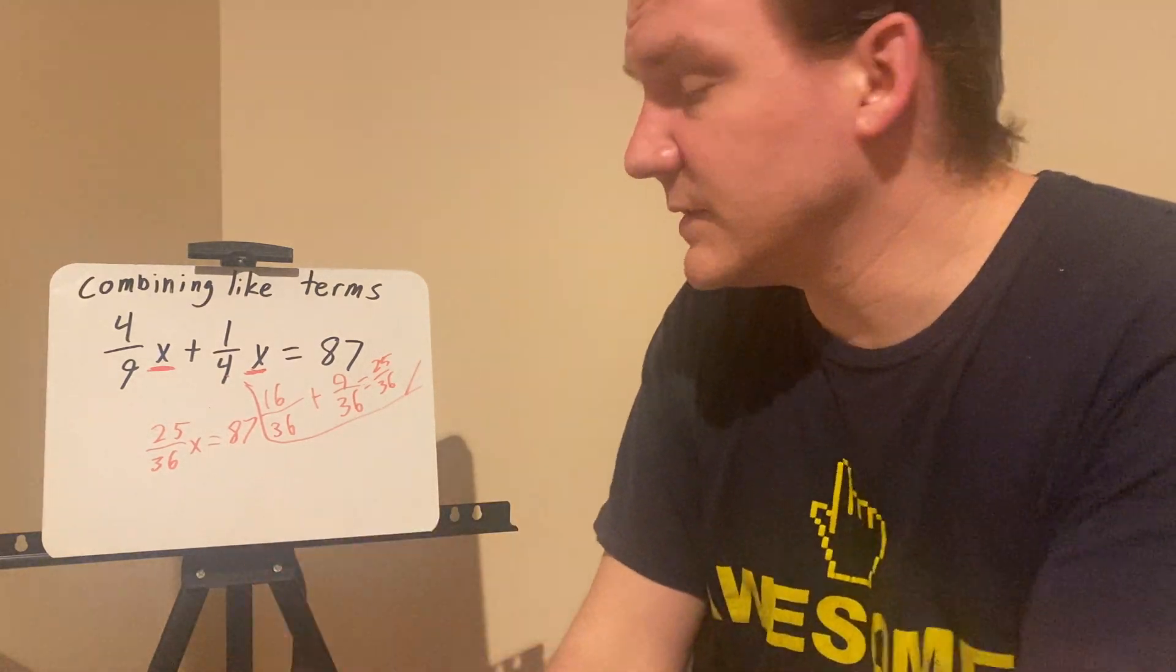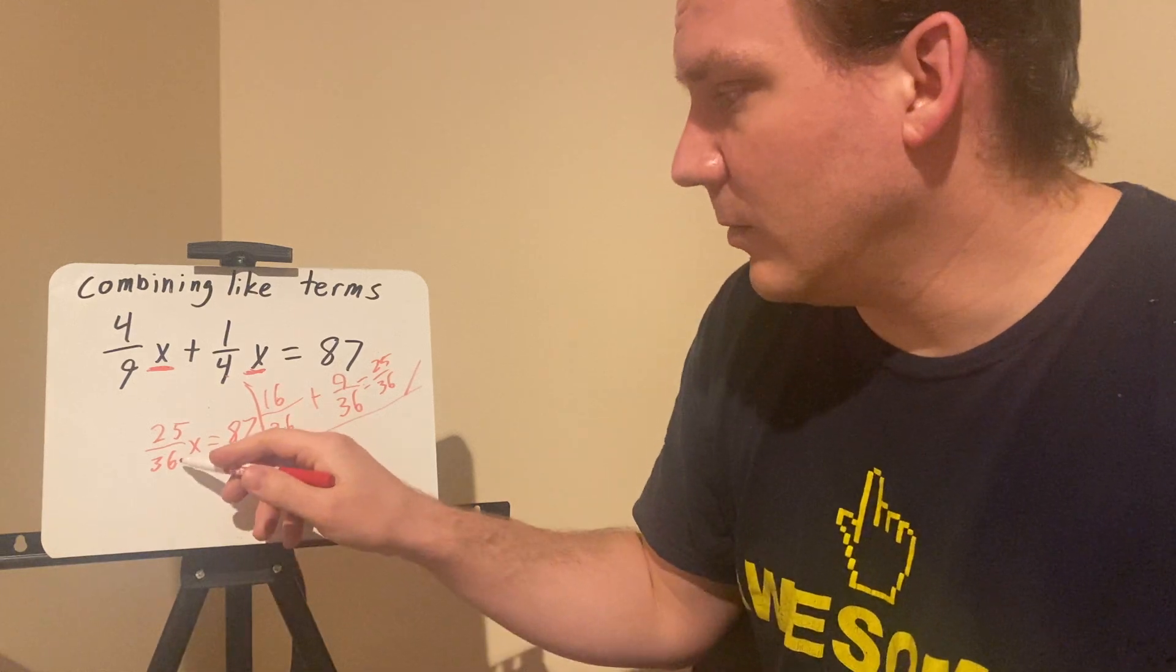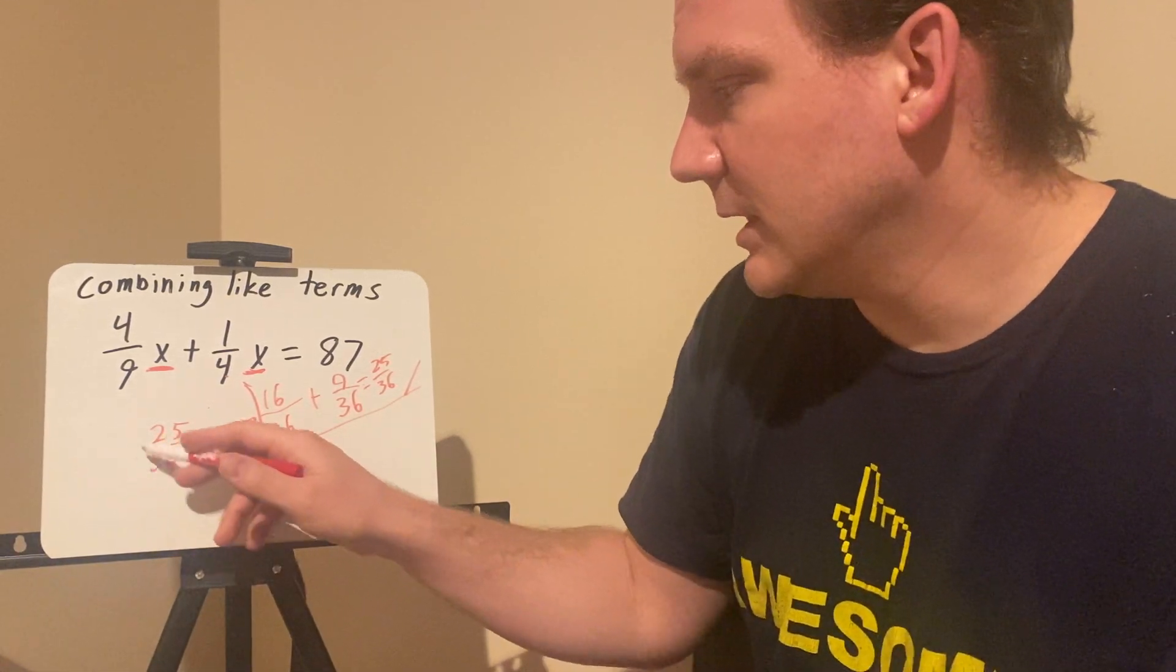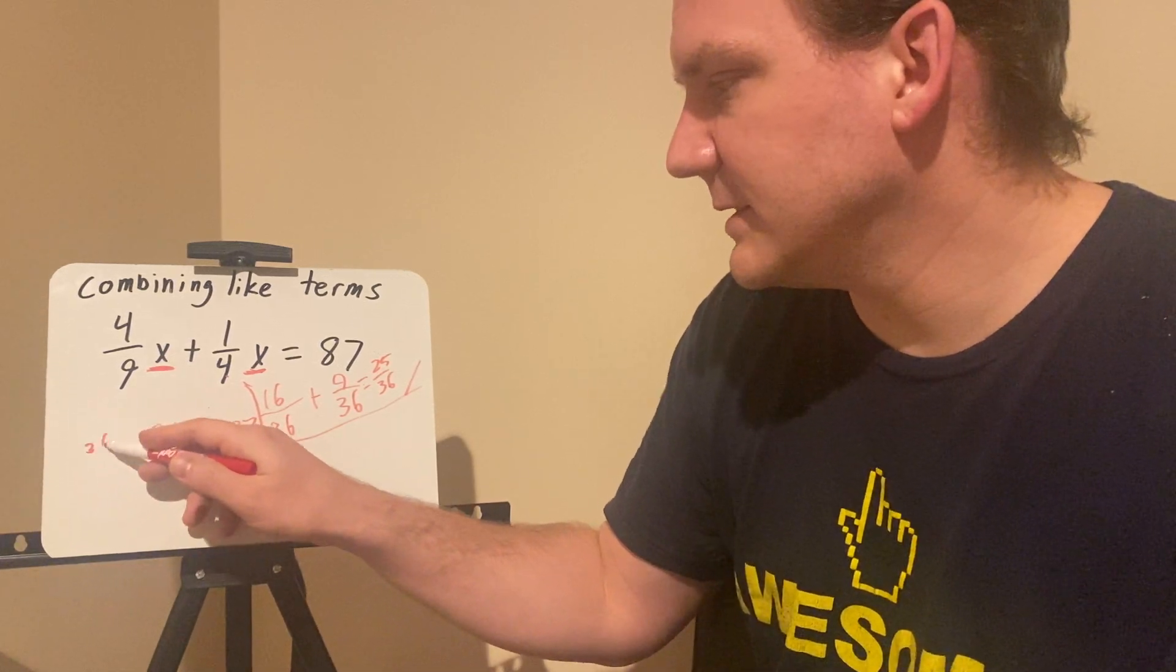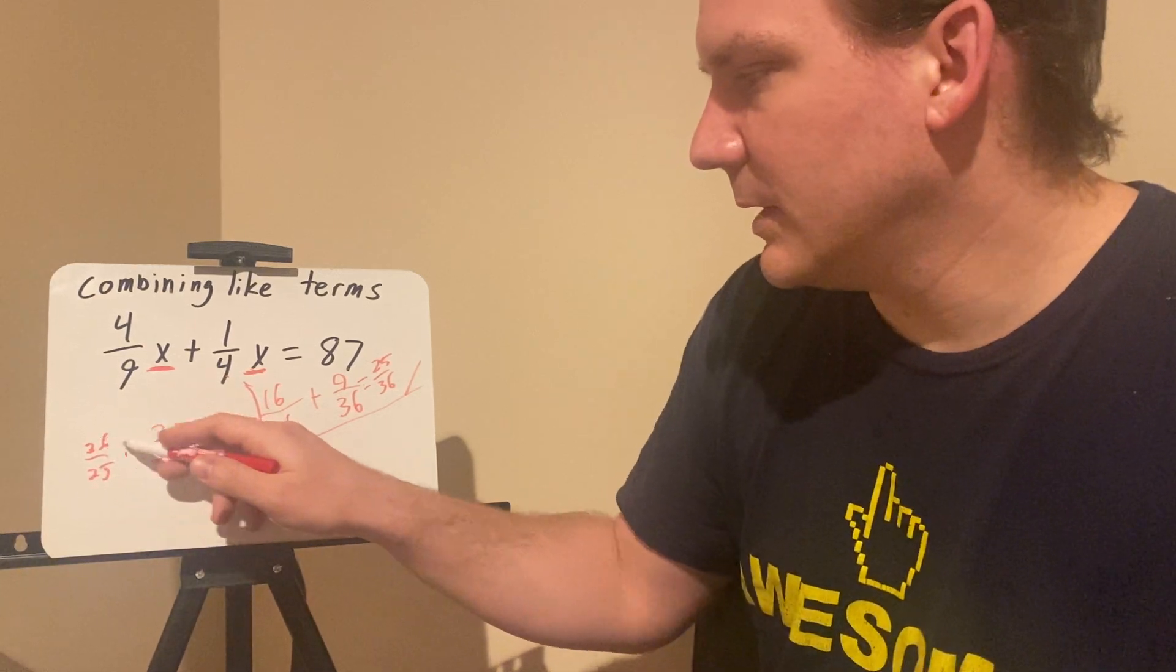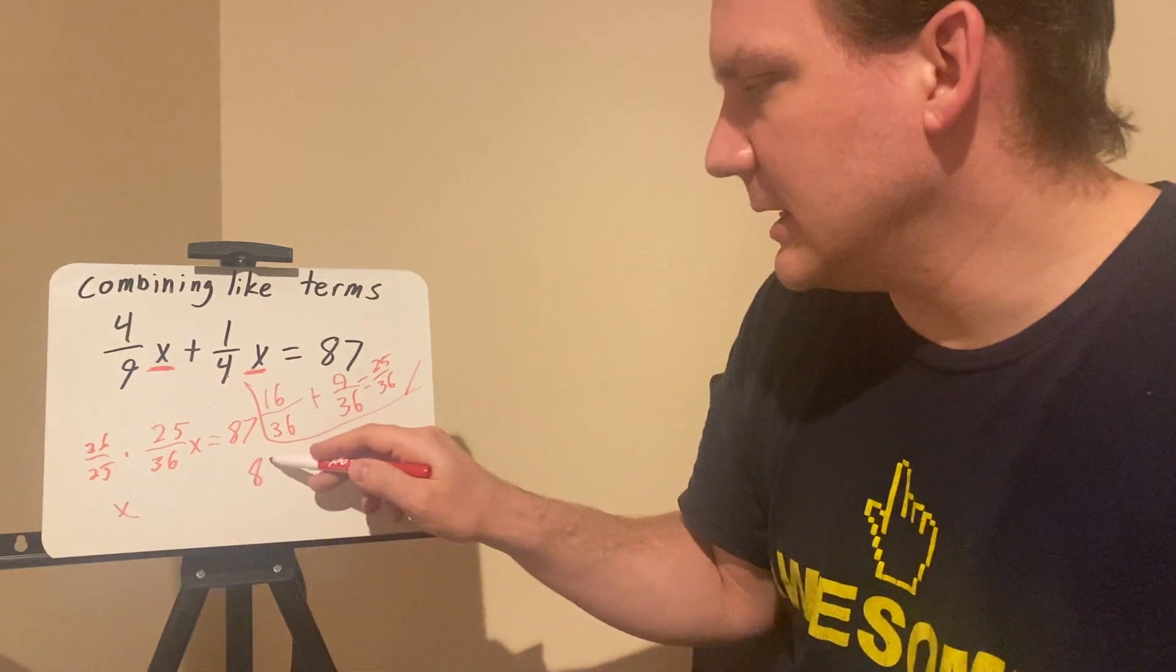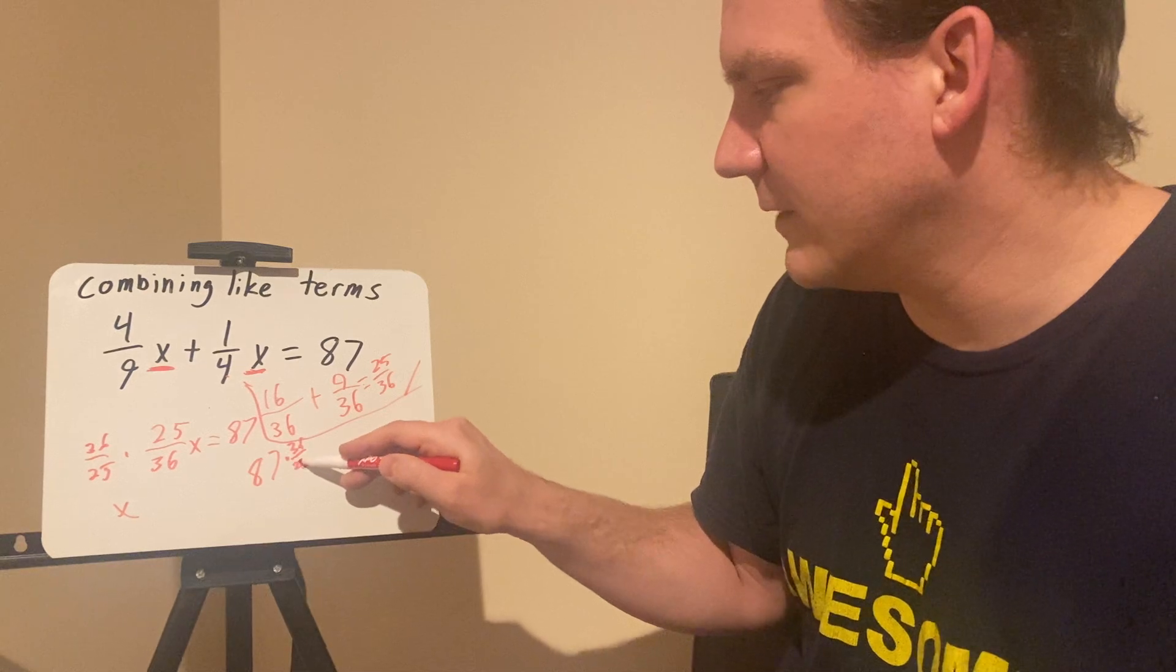Now I could continue to solve for x by using inverse operations. So if I'm multiplying by 25 over 36, since it's a fraction, I would just multiply both sides by 36 over 25. Over here, that would end up equaling one, so you end up with just x.